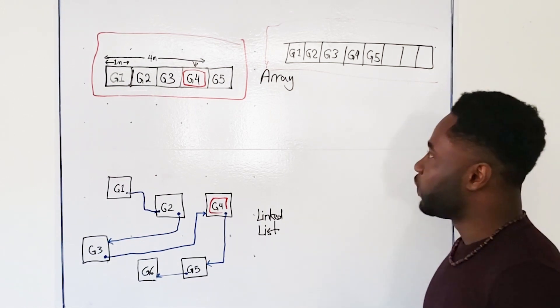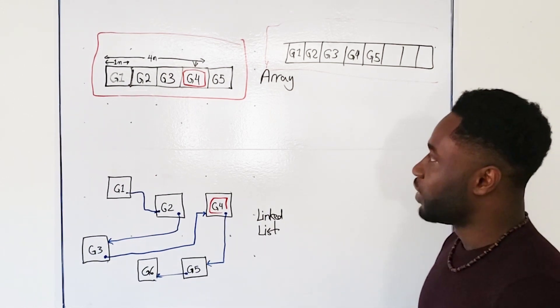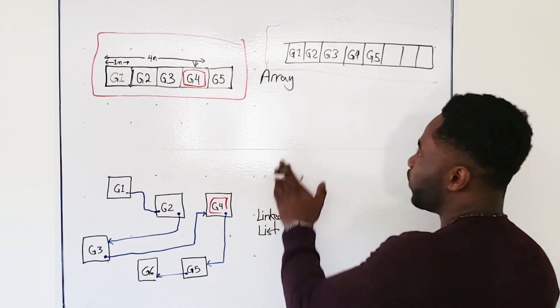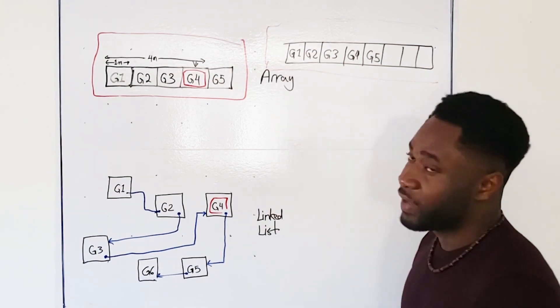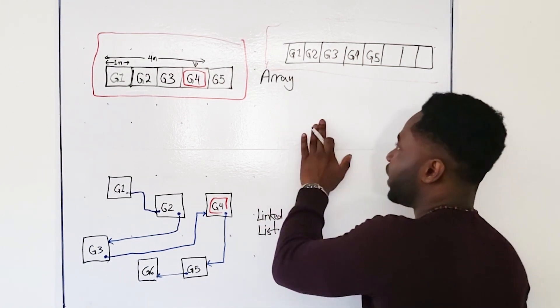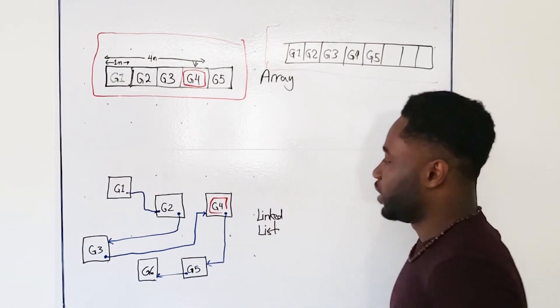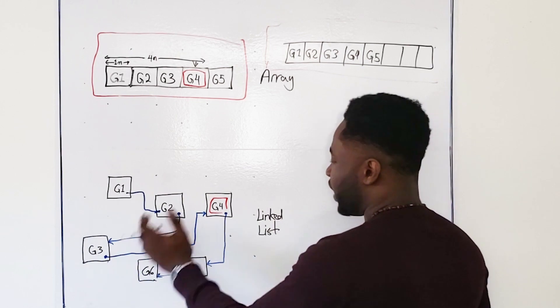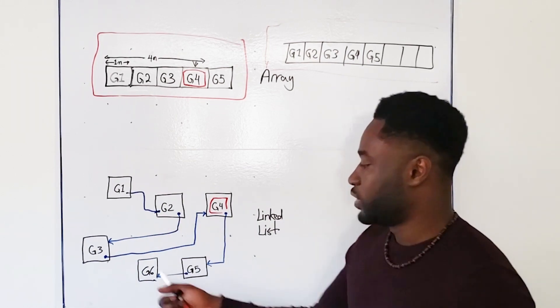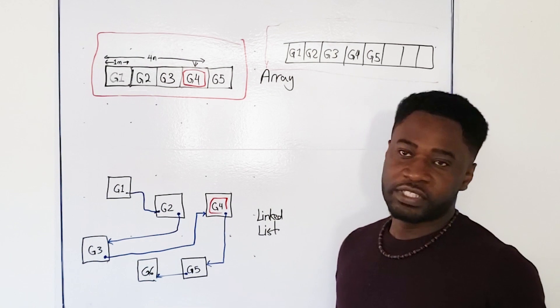So in a way, if you wanted to expand an array, it's much more difficult. As a matter of fact, you'll have to create an entirely new array and shift things. But here, if you wanted to expand things, it's as simple as just adding one more and then changing the link from one to the other. It's as simple as that.